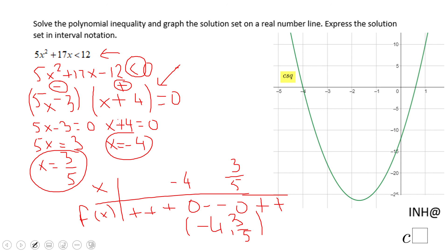If you take a look here, we can notice that on the graph, graphically, 0 here, 0 here, the graph is under the x-axis between -4 and 3/5. Being under the x-axis means the polynomial is less than 0.